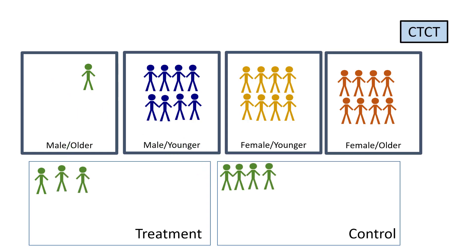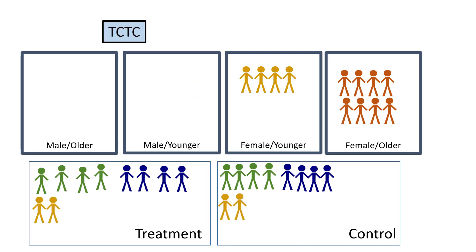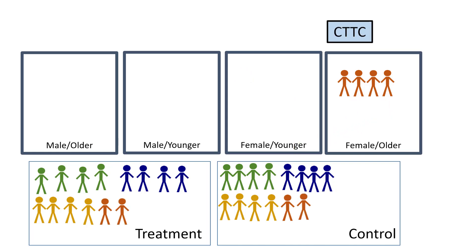And we would continue to do this until everyone was allocated. And what you would see here is that not only do we have equal numbers of participants in the groups, but they are balanced in terms of sex and age category.